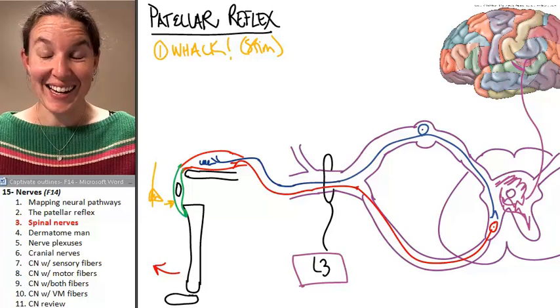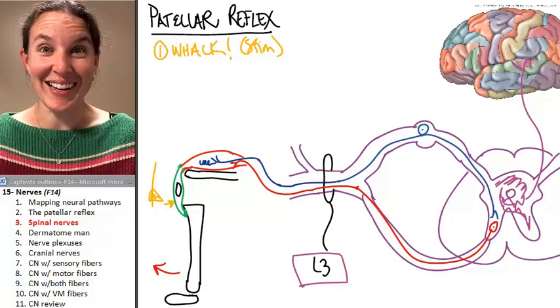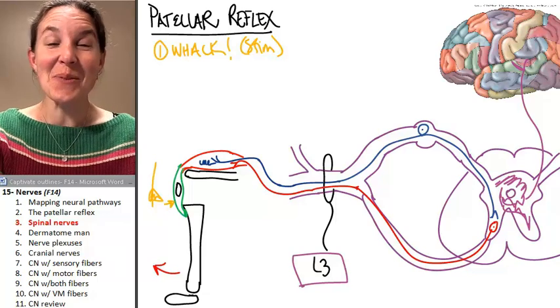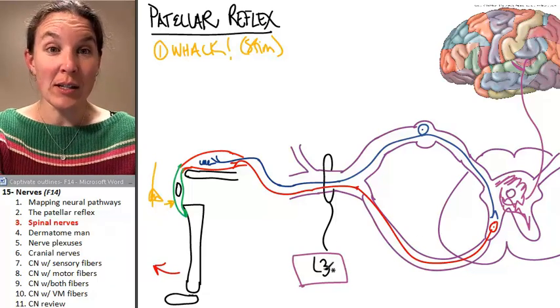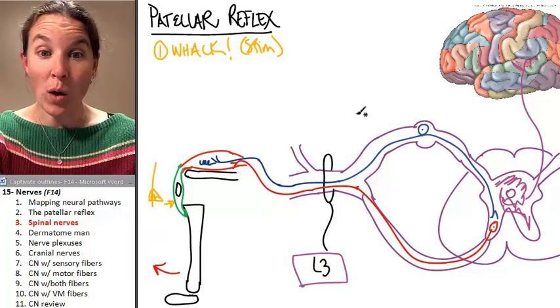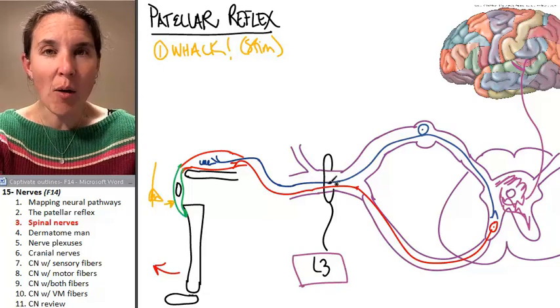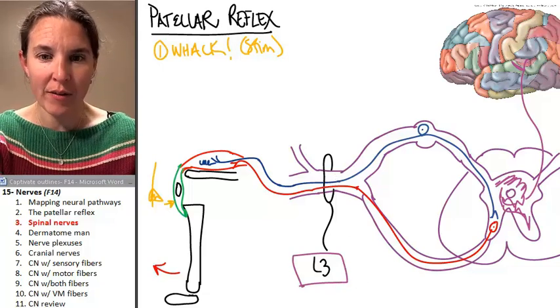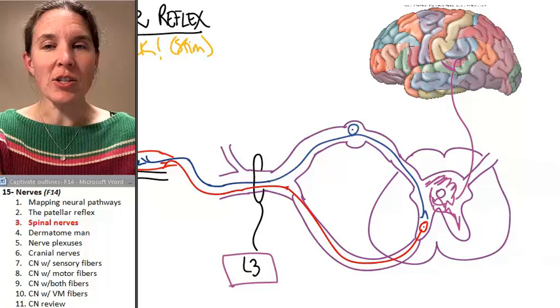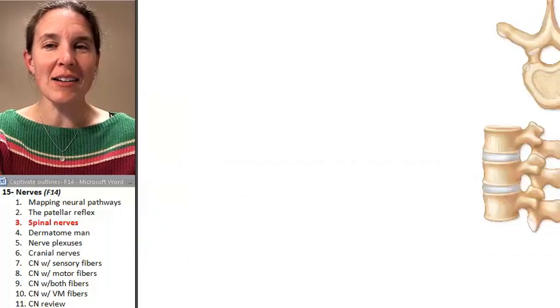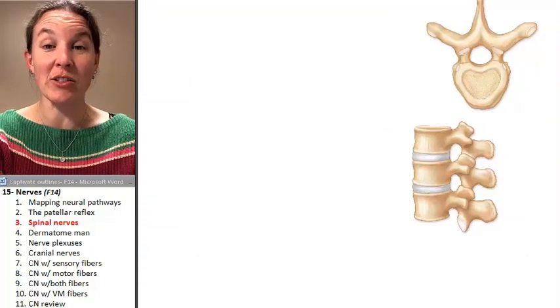Okay, this is really exciting because we're going to look at all of our spinal nerves, all of these guys right here. How many of them do you think we have? We actually have 31 pairs of spinal nerves.